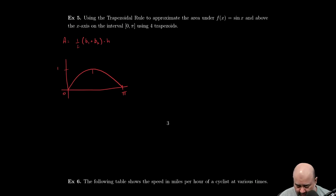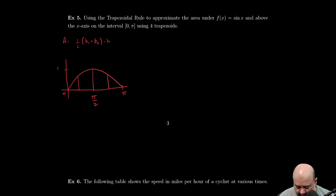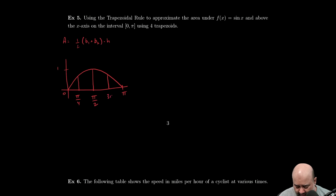Four trapezoids means π/2 is in the middle, 3π/2 is here. No, that's wrong. This is π/4, and then this would be 3π/4.